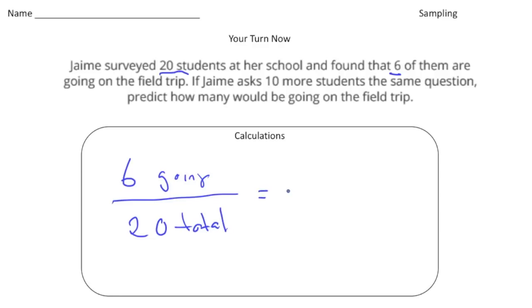That is Jamie's sample. Well, based on that sample, we can now create another proportion. Because the question is, if Jamie asked 10 more, how many would be going on the field trip? So 10 is the total, so 10 goes down here. And that's going to be the unknown. And this is actually a pretty simple proportion to solve, because we know that 20 divided by two gives you 10. So six divided by two gives you three. So the answer is going to be n equals three.